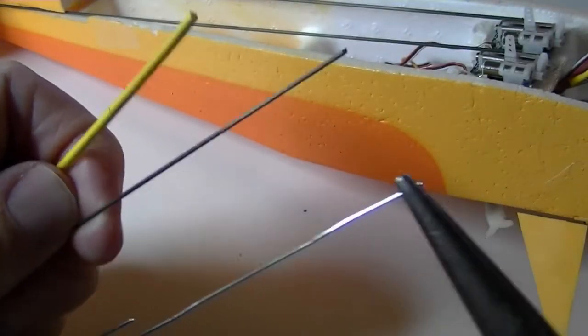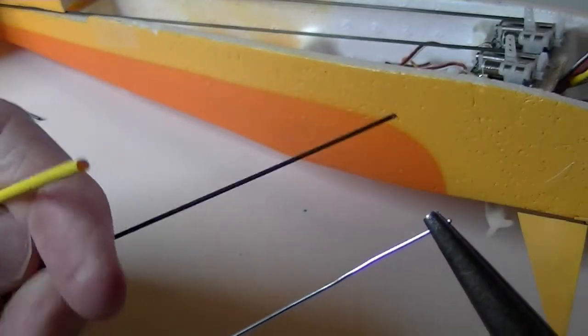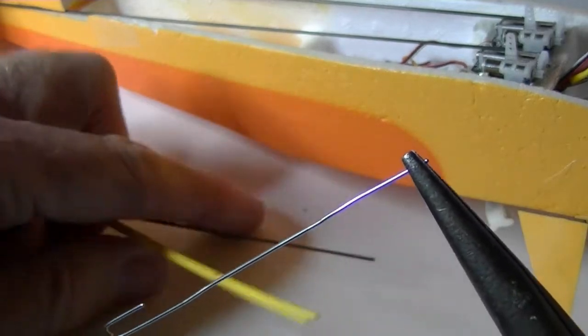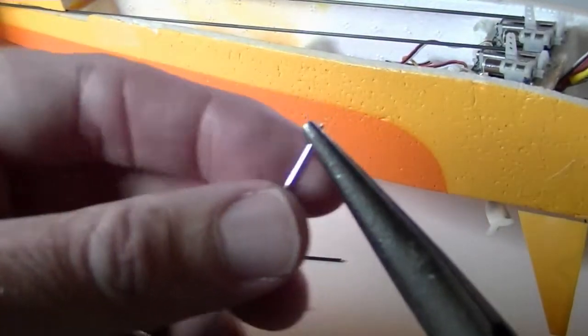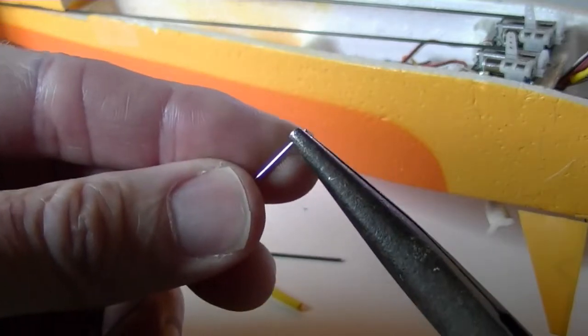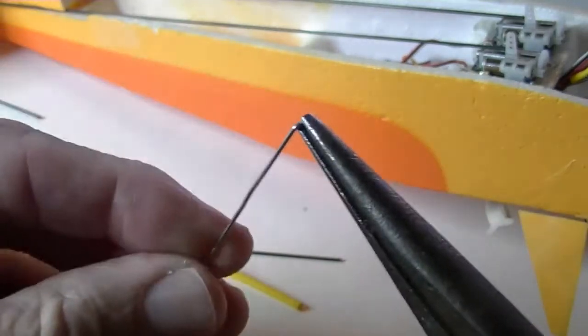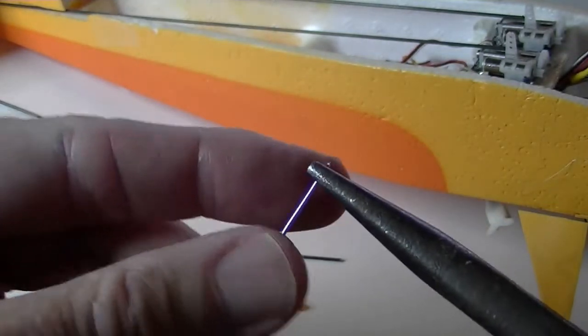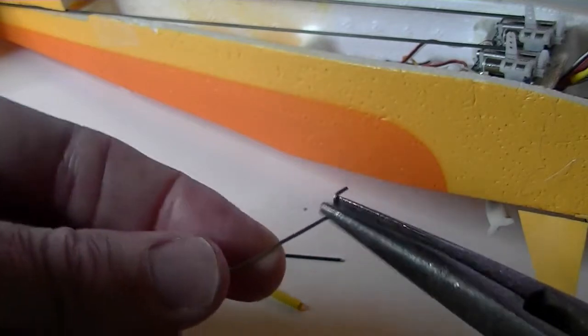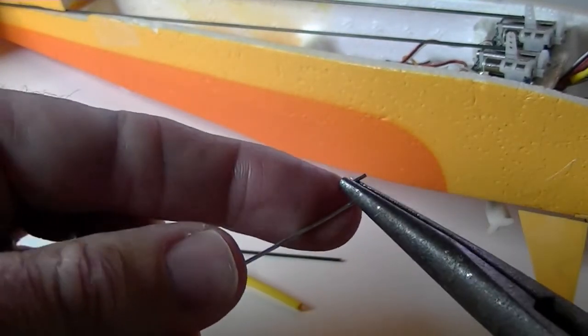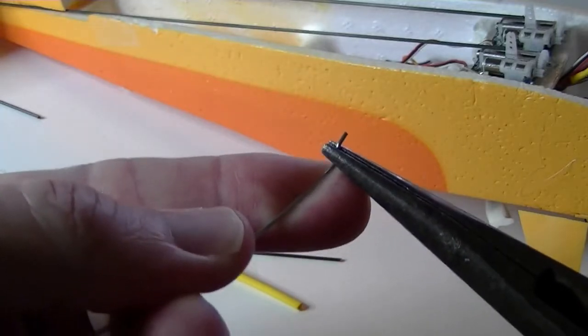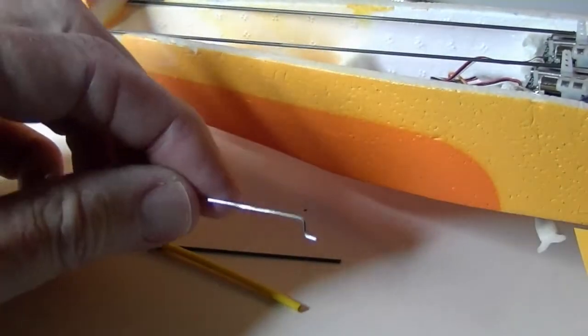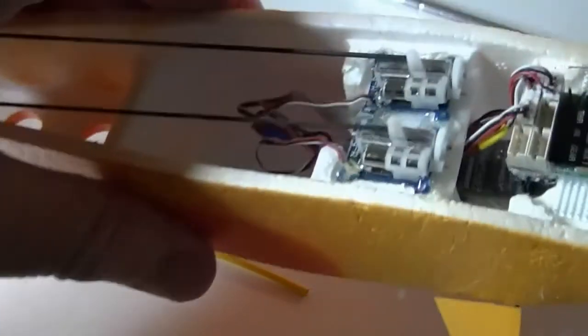I'm getting ready to make some Z-bends to put on the end of this carbon fiber rod and hold it on with some yellow heat shrink tubing. To make a Z-bend all I got to do is make one 90 degree bend like that, and then just make another one in the reverse direction, and then I got a Z-bend. You can clean it up to make sure it's exactly 90 if you want.